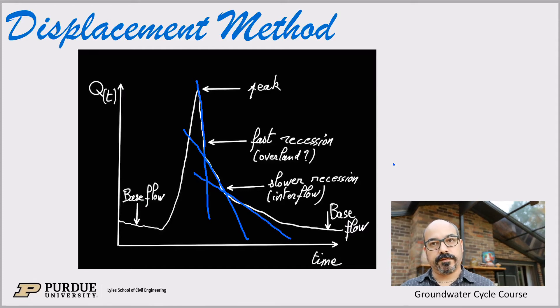So the first one is a very fast recession and that's typically over land flow. So when there's a big rain event somewhere it will infiltrate. But if there's too much rain or it's too intense, then at some point there's some surface flow.